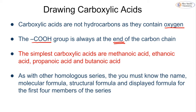At IGCSE we keep it simple and only look at the first four: methanoic acid, ethanoic acid, propanoic acid, and butanoic acid. Similar to our other homologous series, the ending acts as the family name or surname — they all end in 'anoic acid'. The part at the start tells us how many carbons we have. As with all homologous series, we need to know the molecular formula, structural formula, the displayed formula, and the name for the first four.